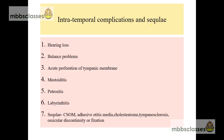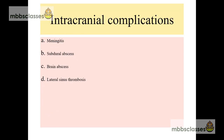Now let us see the intratemporal complications and sequelae. Intratemporal complications can include hearing loss, balance problems, acute perforation of the tympanic membrane, and mastoiditis if the disease extends beyond the mucosa to involve the periosteum of the mastoid. Next is petrositis and labyrinthitis. Sequelae of acute otitis media can include progression to chronic suppurative otitis media or adhesive otitis media. It is also a risk factor for cholesteatoma, tympanosclerosis, and ossicular discontinuity or fixation. In very rare cases, acute otitis media can cause intracranial complications like meningitis, subdural abscess, brain abscess, and lateral sinus thrombosis.